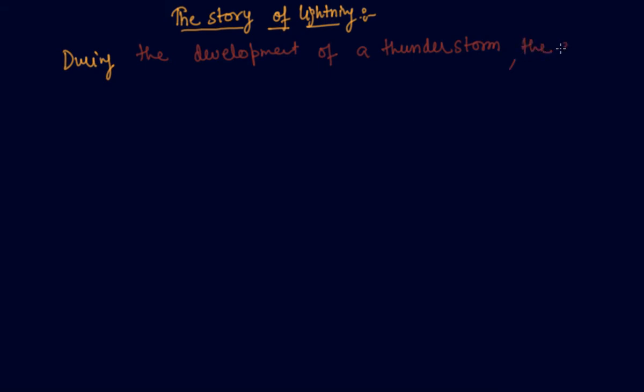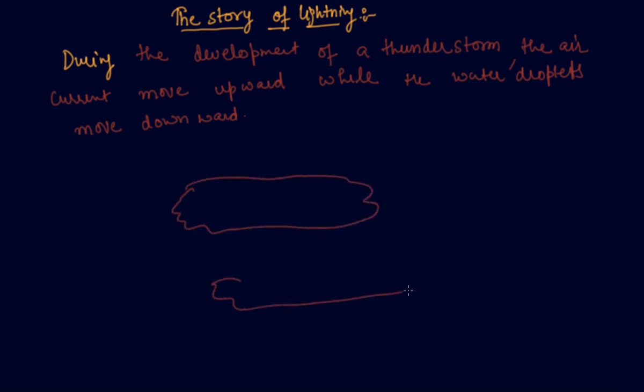the air current move upward while the water droplets move downward. So students, this is the main phenomena to produce charge in clouds. This vigorous movement causes separation of charges. These are the clouds, and these are some other clouds. So in upper clouds there will be positive charge accumulated due to this phenomena during the development of a thunderstorm.